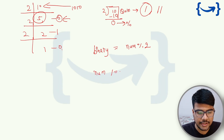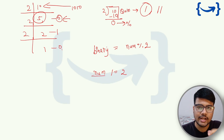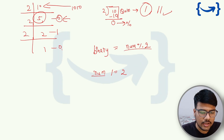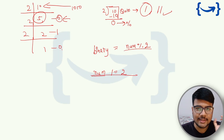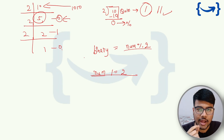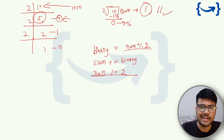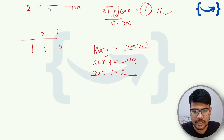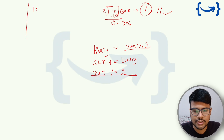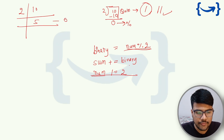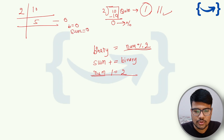Make sure every variable is initialized as int so the decimal part is automatically removed — in Python use floor division. Once you get a binary bit, create a sum variable and accumulate each binary bit as you find it. Let me dry-run this: for decimal 10, first operation gives remainder 0 (2×5=10), so binary bit is 0, and sum stays 0.